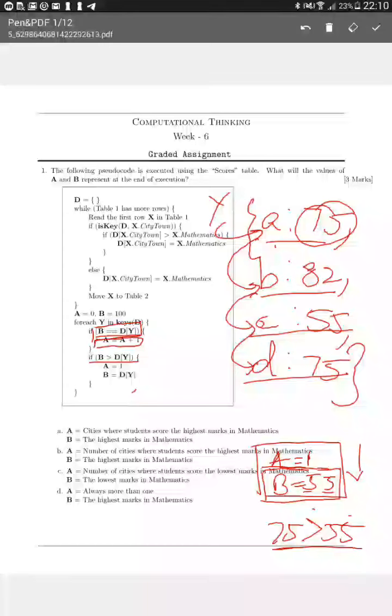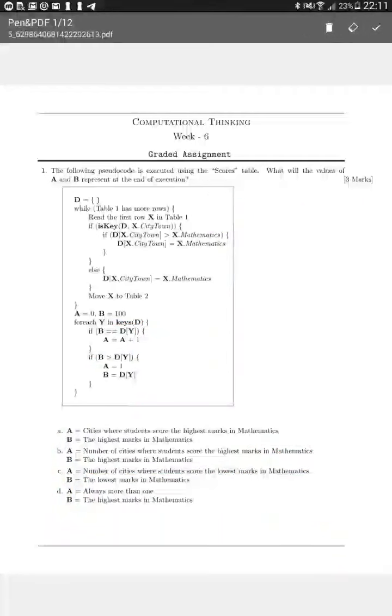That means what we find out here is, from the given options, there is only one option that matches our criteria where A is the number of cities where students have scored the lowest marks in mathematics. There is only one option that actually matches the criteria, and that is option C, where it says that B is the lowest marks in mathematics. We can see that in this question the correct answer is option C: A is the number of cities where students score the lowest marks in mathematics, and B is the lowest marks in mathematics.